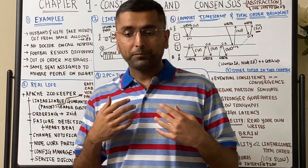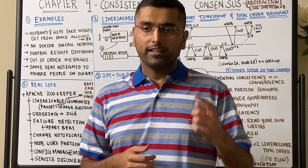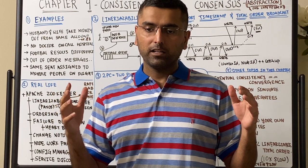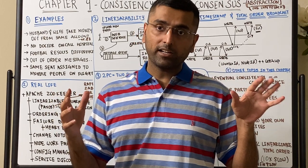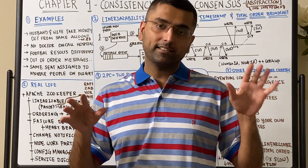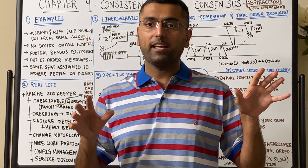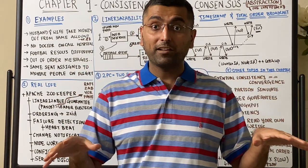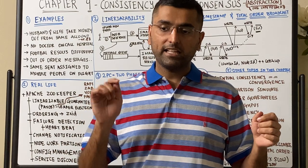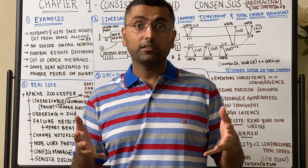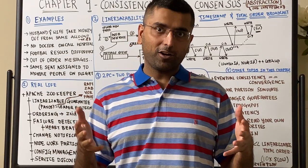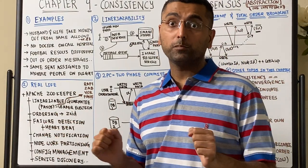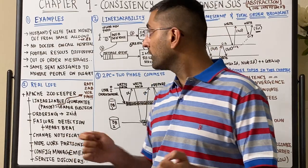Second example: an on-call system at a hospital. At any given point one doctor should be on call. Let's say Dr. A sees that Dr. B is on call, and Dr. B also sees that Dr. A is on call on the same day, so they both feel like maybe they should take that day off. They both try to take that day off at the same time, and the hospital ends up in a state where there is no doctor on call. That's a big problem — there needs to be consensus across machines working in a distributed fashion about what operations are valid.